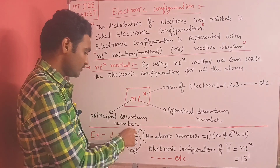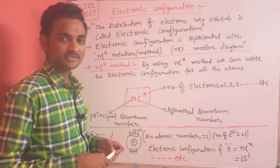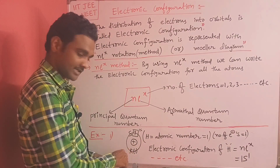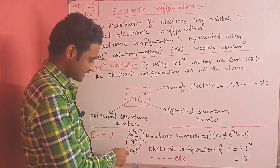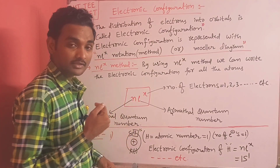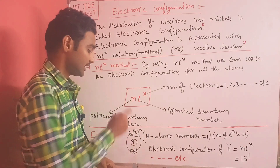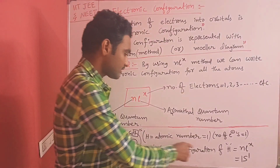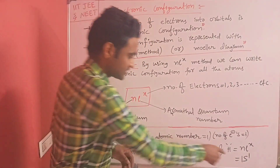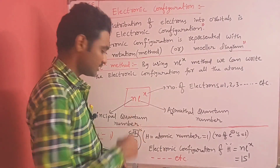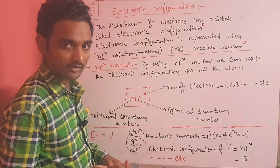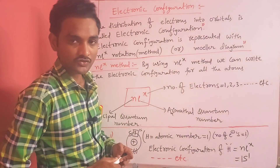Let me give one example: hydrogen, atomic number one. In hydrogen there is one electron. This is the first shell (K shell) of hydrogen. In the K shell there is an s sub-shell, and in that s sub-shell there is one 1s orbital. The electron is in that orbital. So the electronic configuration of hydrogen is 1s1 — here n is 1 (first orbit), l is s, and x is 1 (one electron).